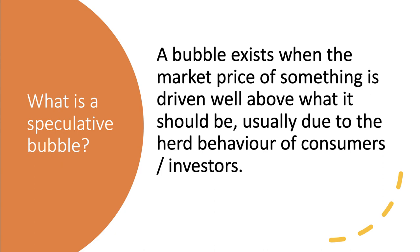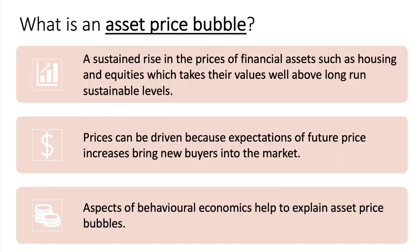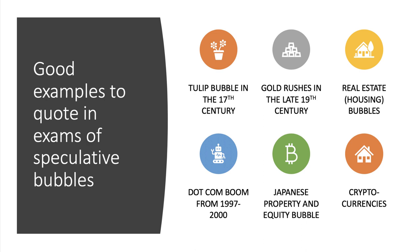So what is a speculative bubble? It exists when the market price of something — particularly an asset — is driven well above what it should be, well above its fundamental or fair level. That's usually the consequence of herd behavior of consumers and in particular investors. Asset price bubbles in markets for assets such as property and shares take those valuations, at least in the short term, well above their long-run sustainable level. Prices are driven higher because of expectations of future price increases, and that brings new buyers and investors into the market. We can apply aspects of behavioral economics to help explain these periods of severe asset price bubbles.